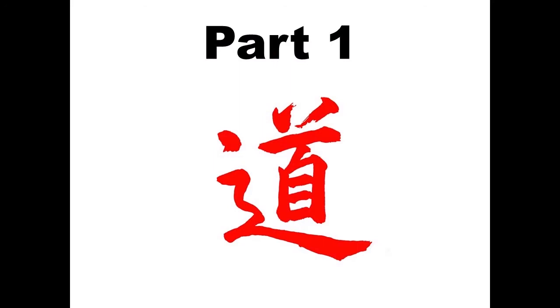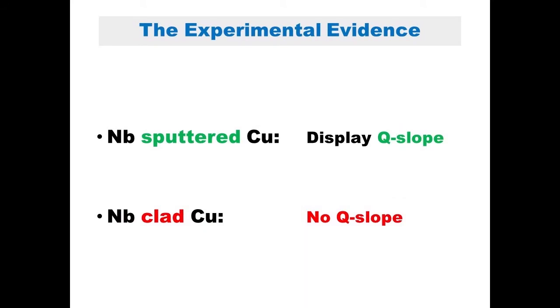We propose in this talk the thick film approach in order to attempt to solve this problem. The talk is divided in three parts. The first part addresses the question: why thick films? Starting from one experimental evidence, let's compare niobium sputtered cavities with niobium clad cavities. Niobium sputtered copper cavities display a Q-slope, whereas niobium explosively bonded copper cavities have no Q-slope. That means the problem of Q-slope lies inside the fabrication technology and is not an intrinsic problem of the niobium-copper system.